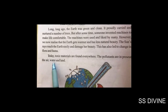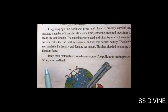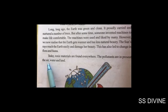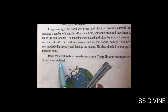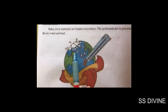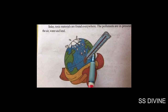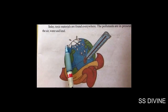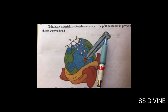Pollutants हर एक जगह present हैं — air, water, and land में। कोई vehicle चलाए तो smoke produce होगा और air गंदी होगी। अगर कचरा पानी में डालें तो water गंदा होगा, और जमीन पर डालें तो land गंदी होगी। इस तरह से हमारी Earth गंदी हो रही है। जैसा आप यहां देख सकते हो, Earth के मुँह में thermometer है — क्योंकि Earth बहुत परेशान है और उसका temperature बढ़ रहा है।